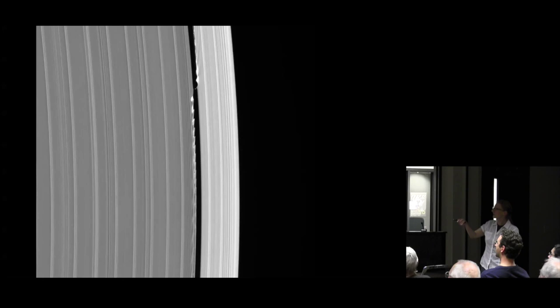Cassini was able to confirm that in the outer edge of the A-ring, the Keeler gap, there is a small moon embedded creating that gap. We knew about these wiggles around the edge before but we never had unambiguous detection of the moon itself within the gap. This is one of the moons that Cassini discovered. You can nicely see these edge waves that are part of the wake effect.